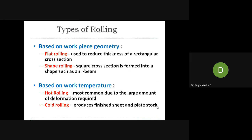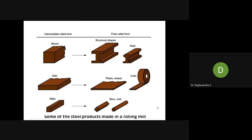Based on workpiece geometry, there are flat rolling and shape rolling. Flat rolling reduces thickness to a rectangular cross-section. Shape rolling can produce I-beam structures used in civil construction. Based on work temperature, there is hot rolling and cold rolling. Some examples of rolled products include structural shapes (I-shapes), flat bars, coils, billets, and slabs used for different applications — springs for shock absorbers, I-structures for civil construction, bars and rods for machinery and engine parts.